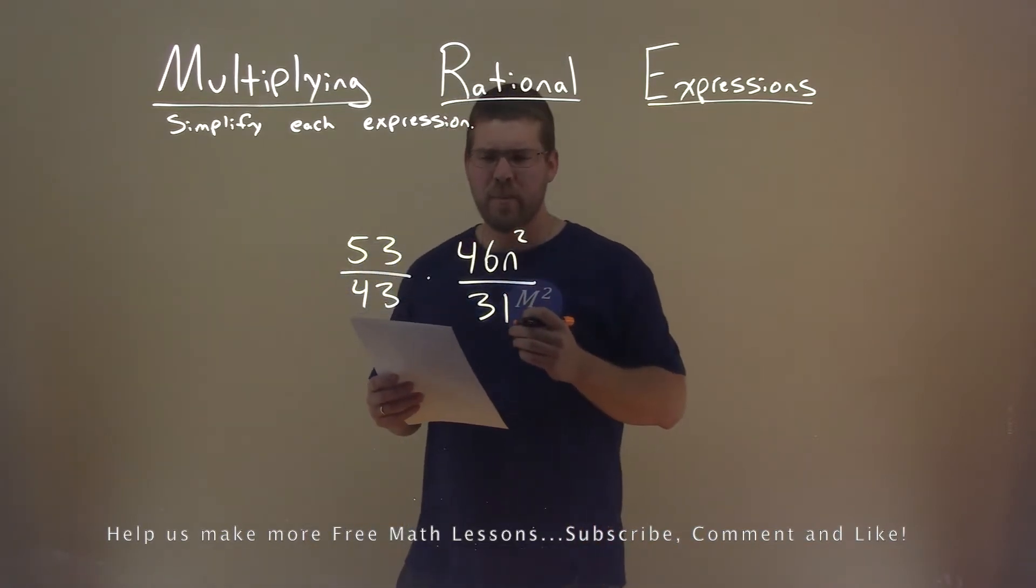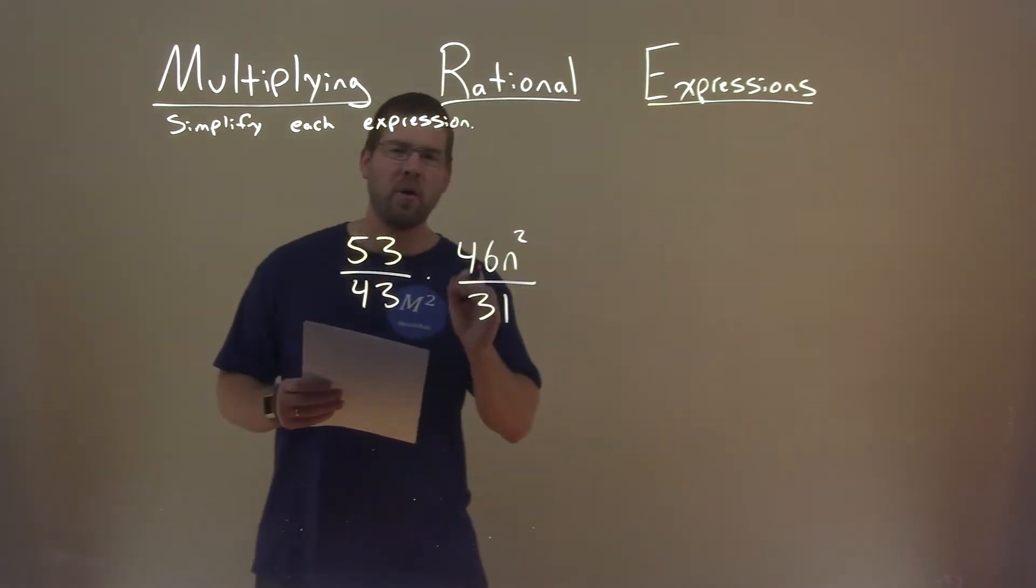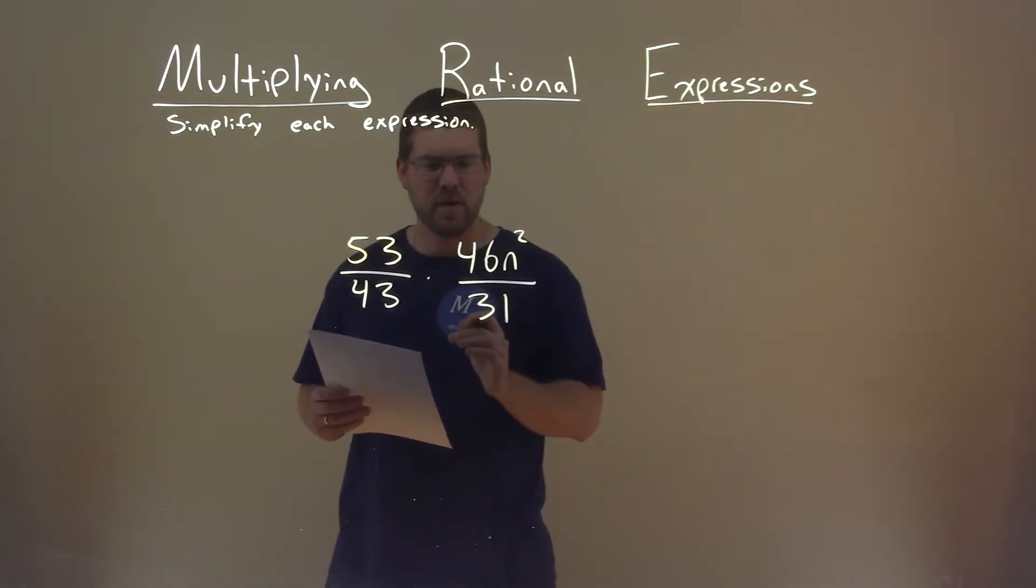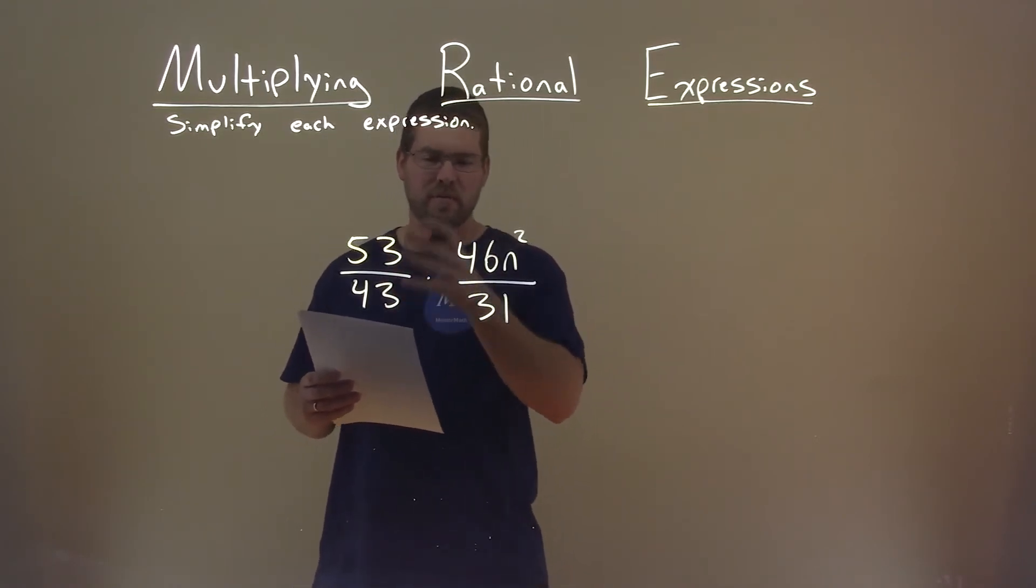One thing off the bat I see: 53, 43, and 31 are all prime numbers. So my goal is to try to cancel some things out first. Well, since they're all prime numbers, they don't share a common divisor.